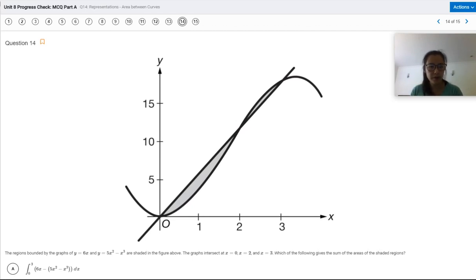In this question, it says the regions bounded by the graphs of y equals 6x and y equals 5x squared minus x cubed are shaded in the figure above. The graphs intersect at x equals zero, x equals two, and x equals three.